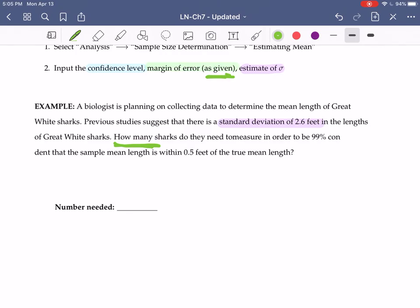How many do we need to measure in order to be 99% confident that the sample mean length is within 0.05 feet? That within 0.05 feet is the desired margin of error.